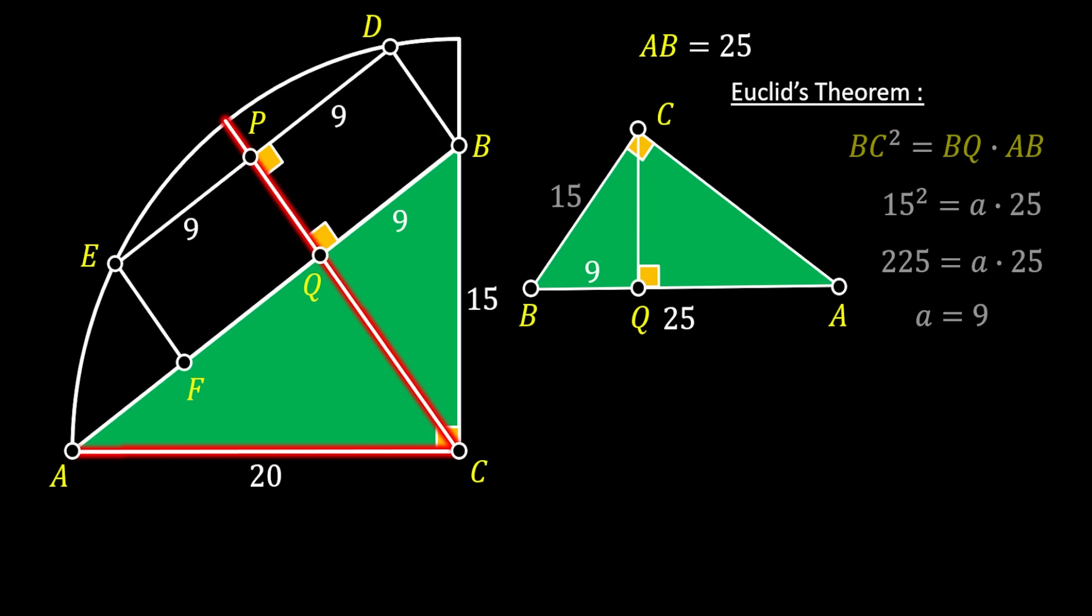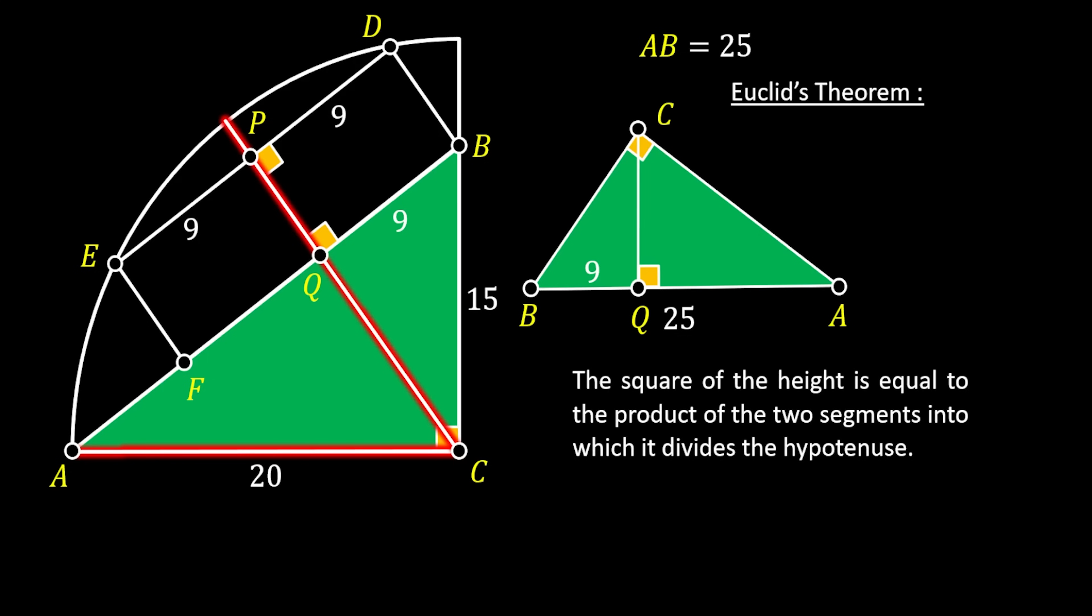Now, let's stay with the Euclid's theorem for a little longer and let's try to calculate the height of this triangle QC. We can do this easily with the fact that the square of the height is equal to the product of two segments into which it divides the hypotenuse. So, in our case, QC squared is equal to the product of the segments BQ and QA. Of course, since our hypotenuse has the length of 25 and BQ has the length of 9, this means that QA must have the length of 16. Now, we can substitute those values into our equation and simplify to finally get that the height QC must be equal to 12. We can, of course, set this value into our sketch on the left as well.